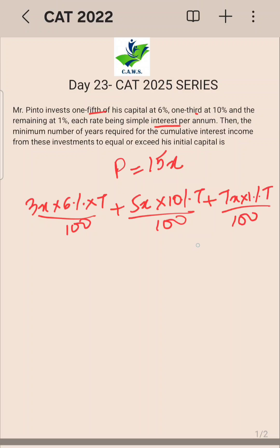Now this value should equal or exceed the initial capital. So the interest should be greater than or equal to 15x. Are you getting my point? This will become 18 plus 50 is 68, 68 plus 7 is 75. So 75% or let's say (75x × T)/100 should be greater than or equal to 15x.